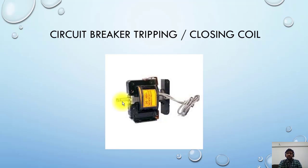These coils are for short duty only. They are not designed for continuous DC supply — if continuous DC is connected, the coil will burn. We have to cut the DC fast. Normally the pulse duration used in protection circuitry is 100 to 120 milliseconds to operate the closing coil or tripping coil. If you apply it for more seconds it will easily burn, as it draws a huge current.